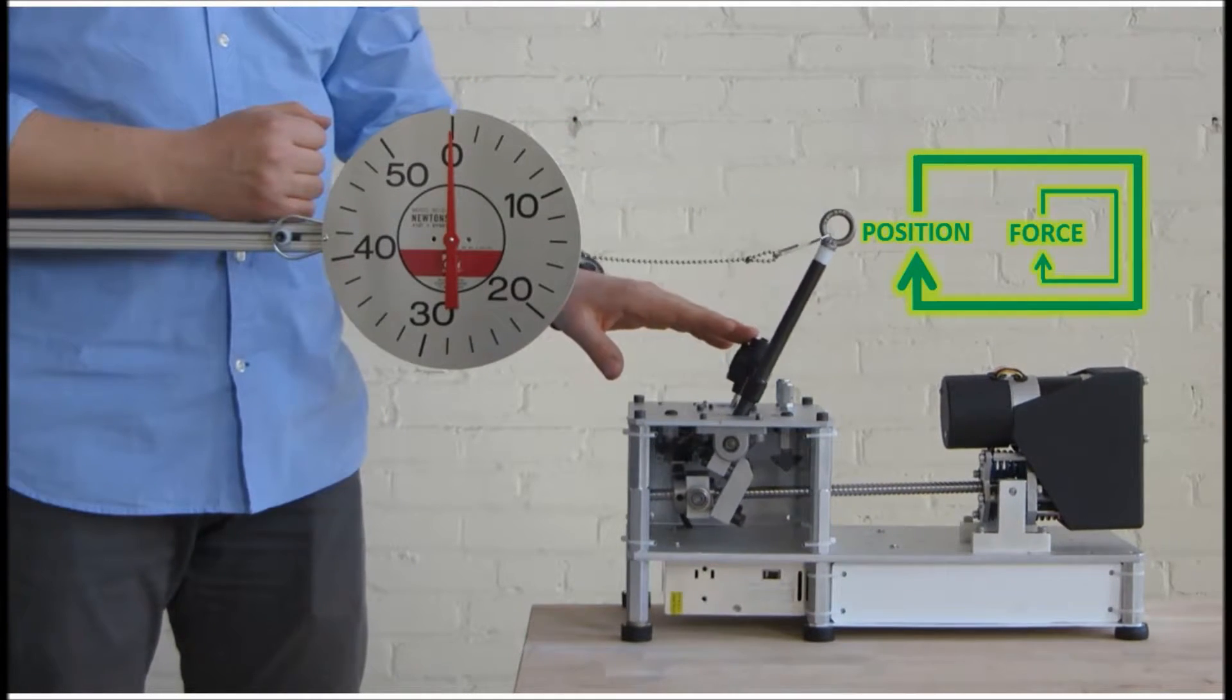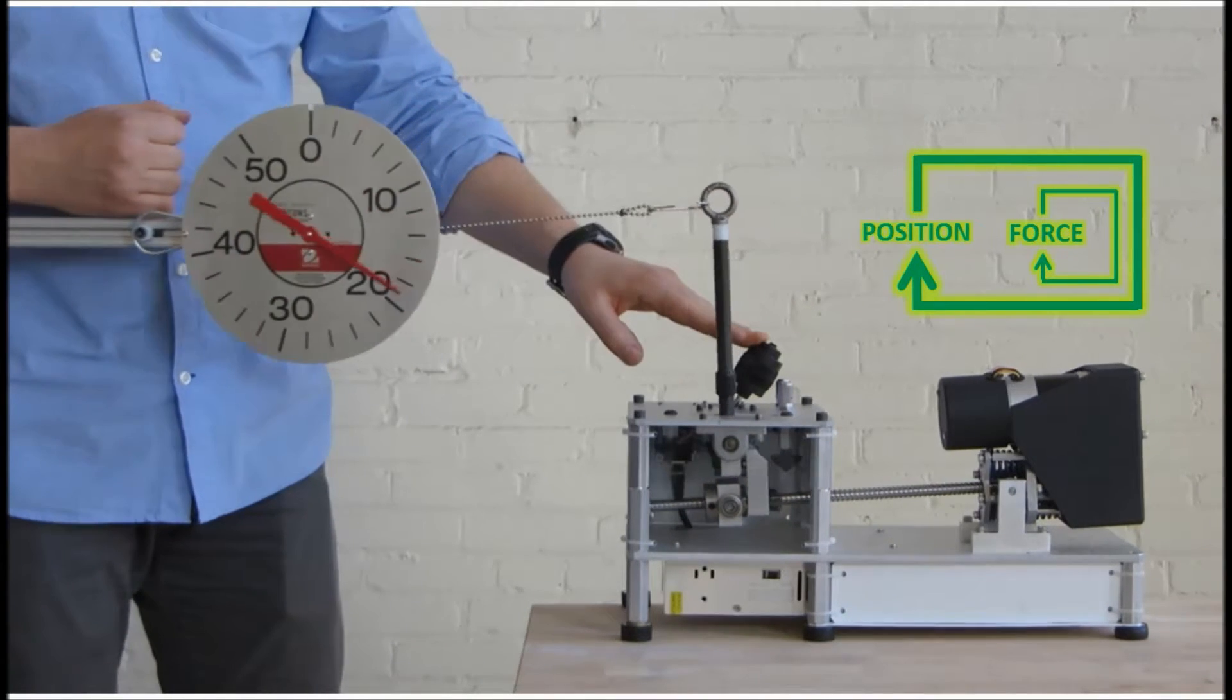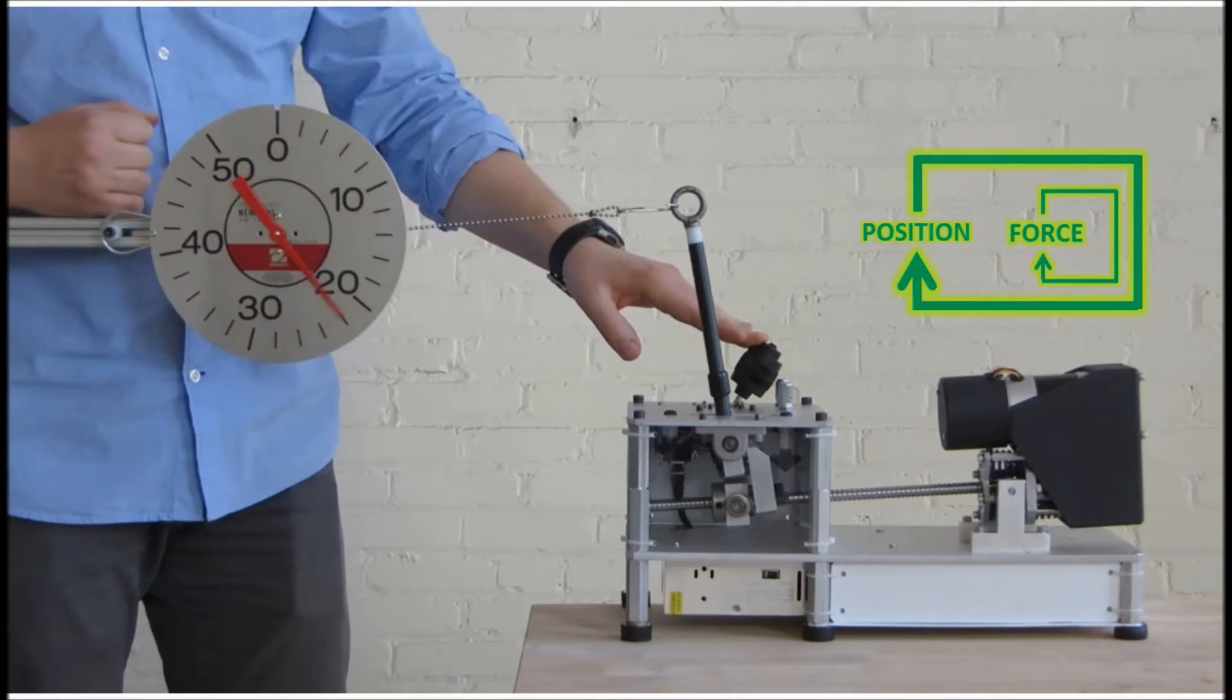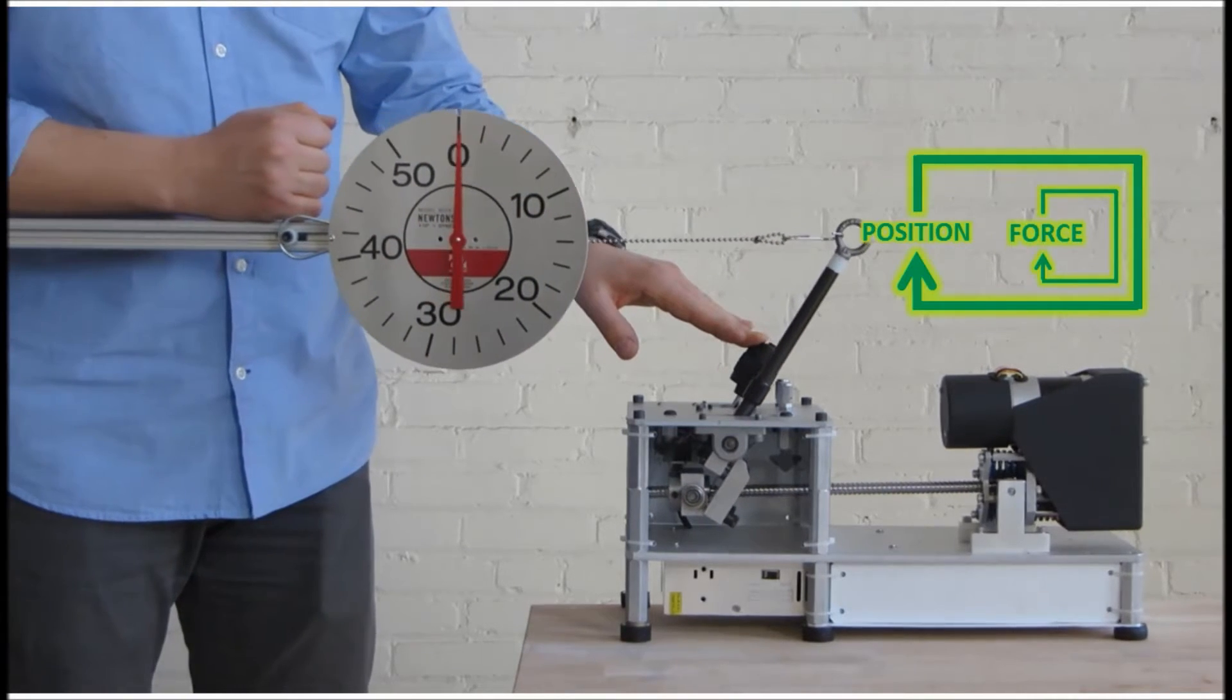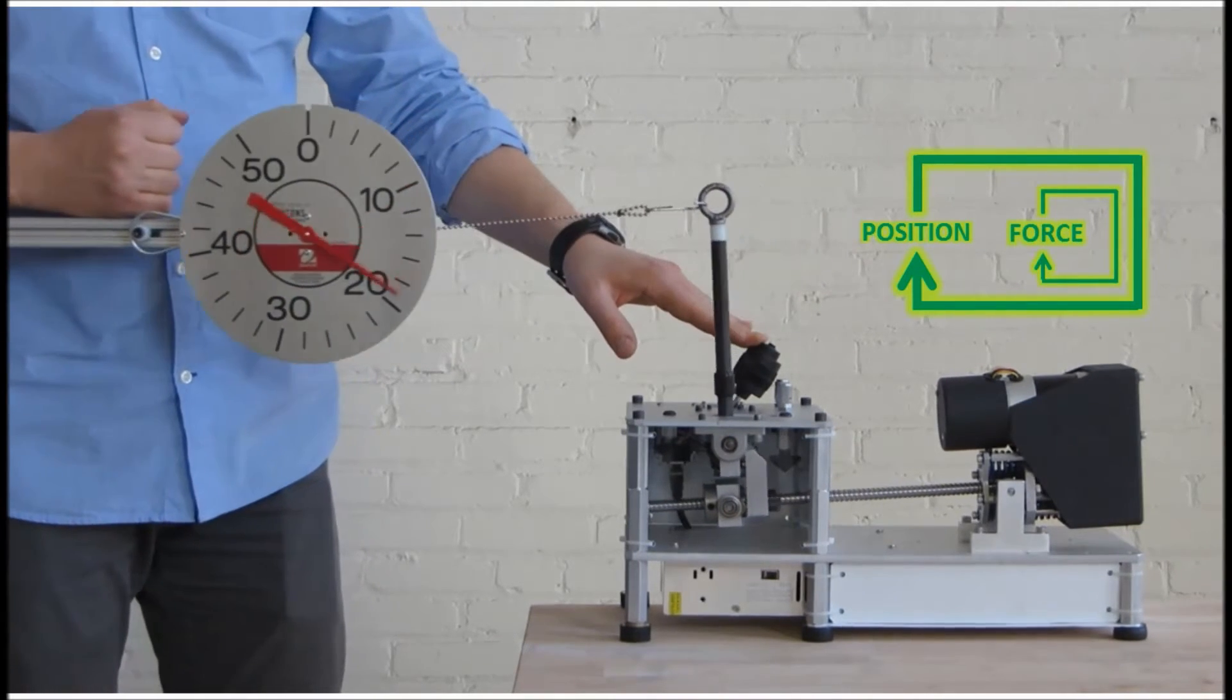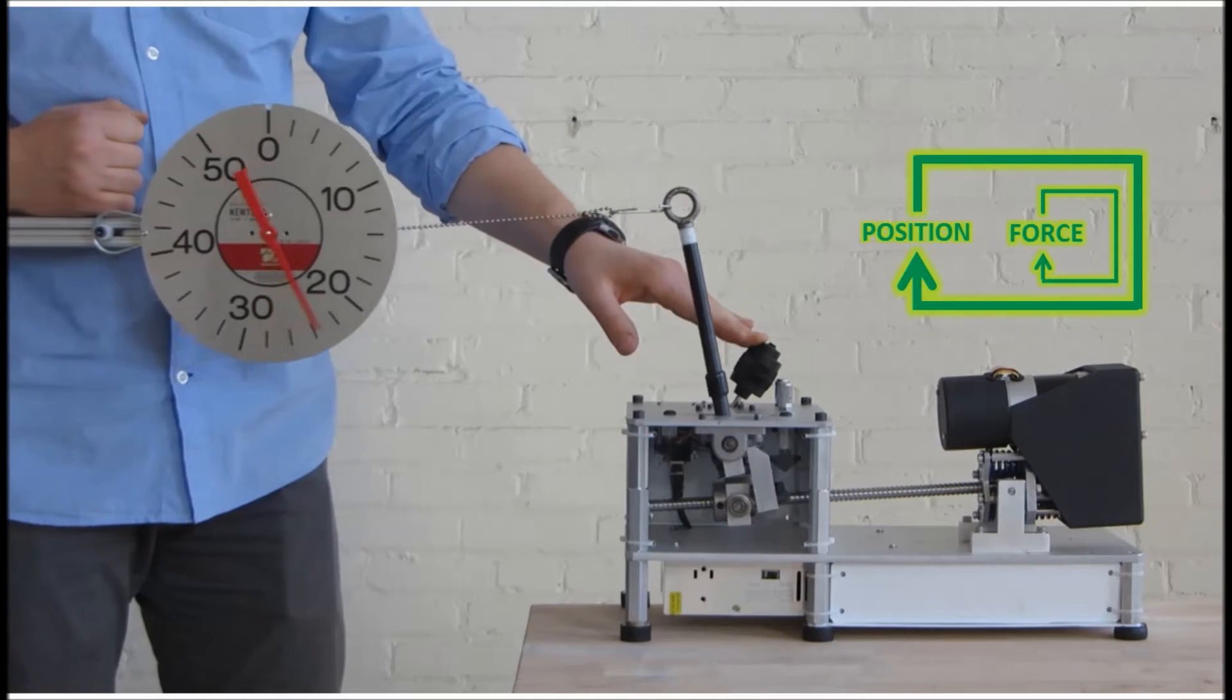When the gain is increased, the stiffness increases. This makes it possible to customize how stiffly or how softly a robot reacts to people or other objects in its environment.